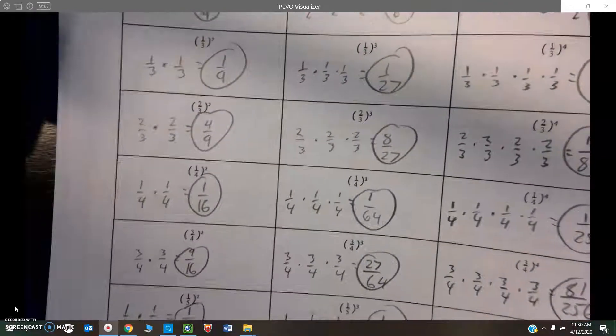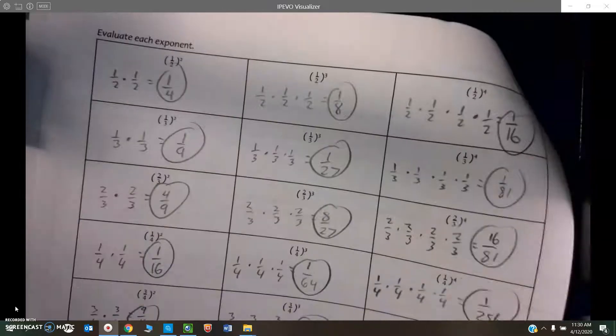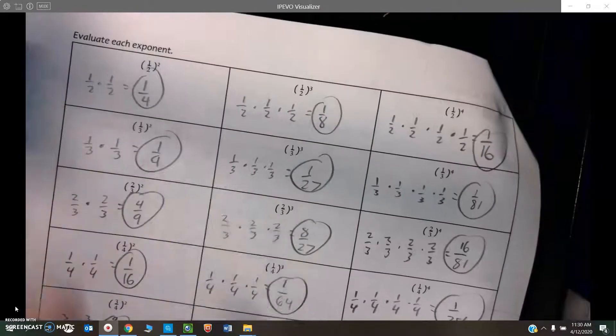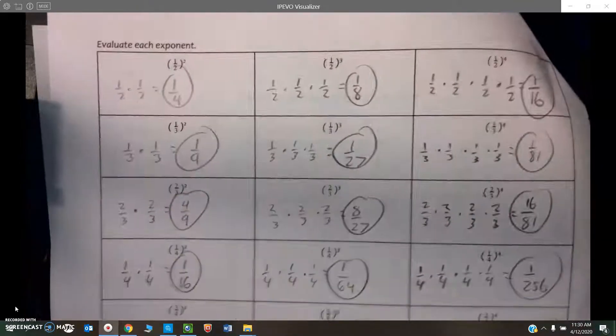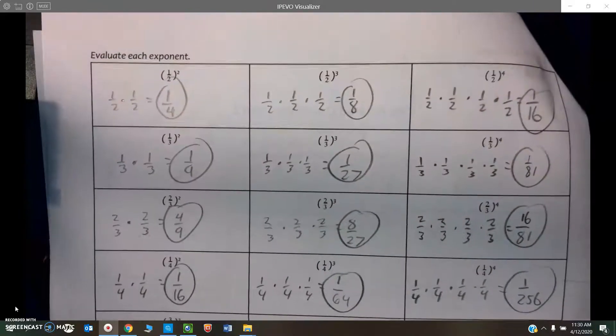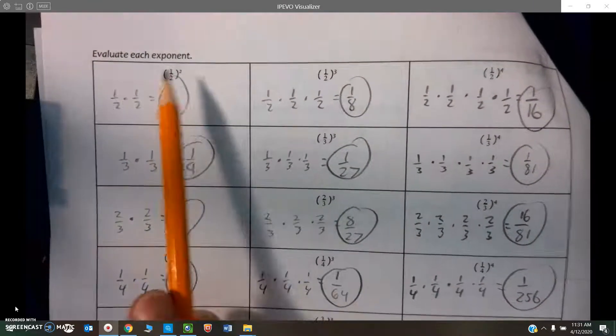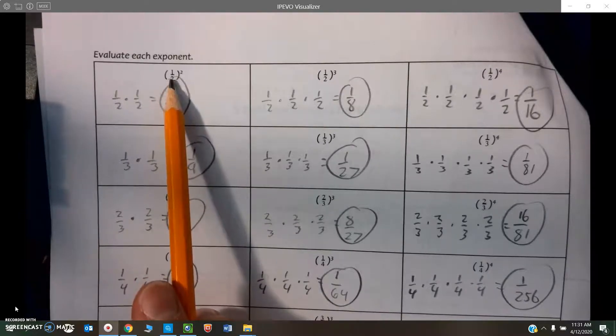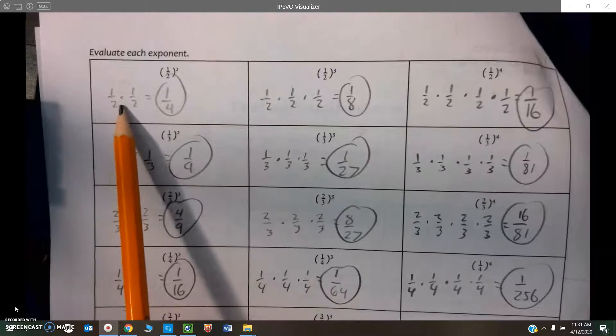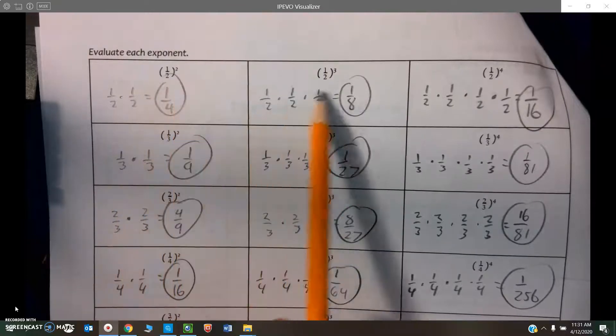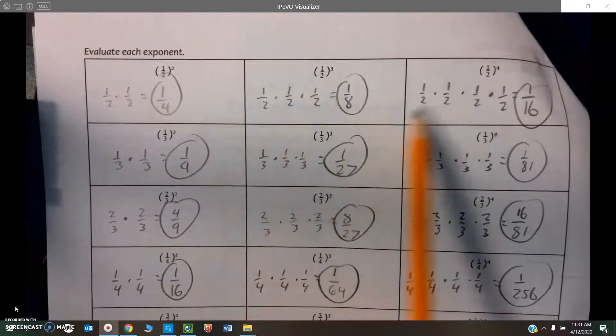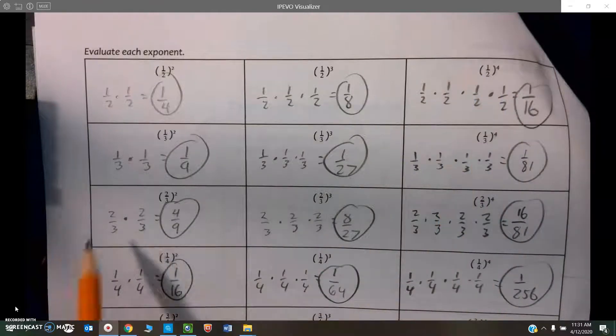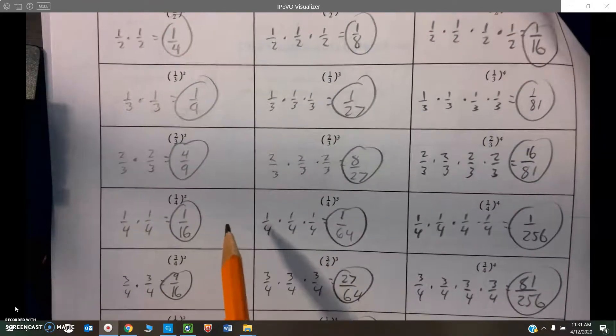Now looking at our fluency, this was all exponents with fractions. Once again, feel free to pause this video if you need to stop and look at the answers. So exponents, again, are repeated multiplications. So whatever the exponent is, that means you have to take your base and multiply it times itself that many times. So here you can see 1/2 times itself twice, 1/2 times itself three times, 1/2 times itself four times. And then same thing down the line.